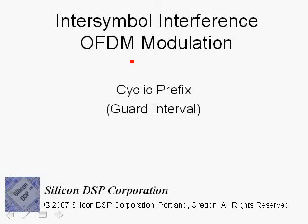I will now discuss the concept of a cyclic prefix in OFDM modulation in order to combat inter-symbol interference. The fact that OFDM symbols are created through the process of an inverse discrete Fourier transform or inverse FFT leads to the concept of using a cyclic prefix, which results in a significant reduction in complexity compared to equalization in the time domain using, for example, decision feedback equalizers.